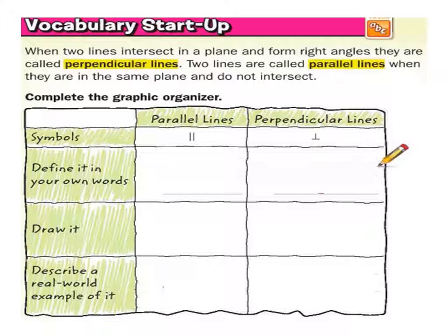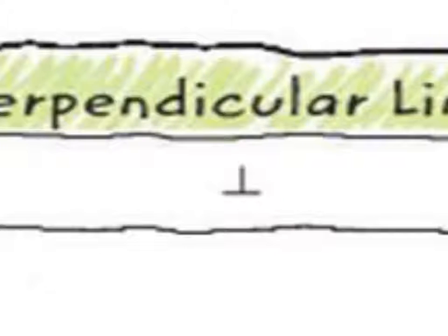Perpendicular lines, on the other hand, they meet once, but in a very unique way — they come together, as you can see here with this little symbol. Perpendicular lines come together, but when they do, they form a 90-degree angle. So that would be perpendicular.